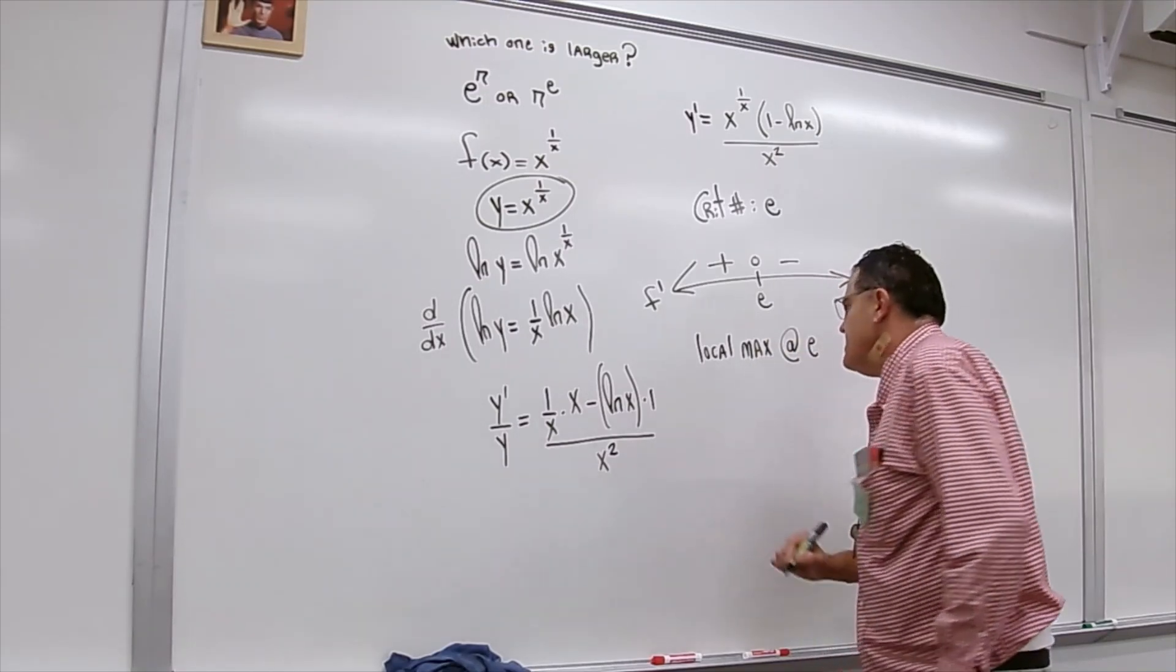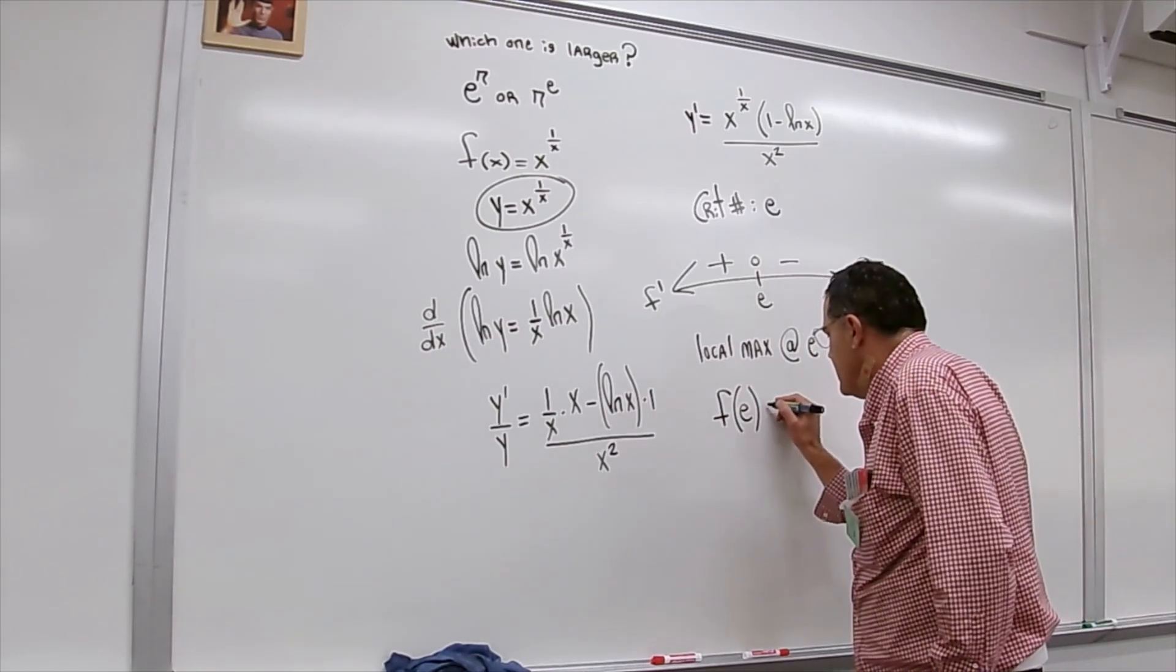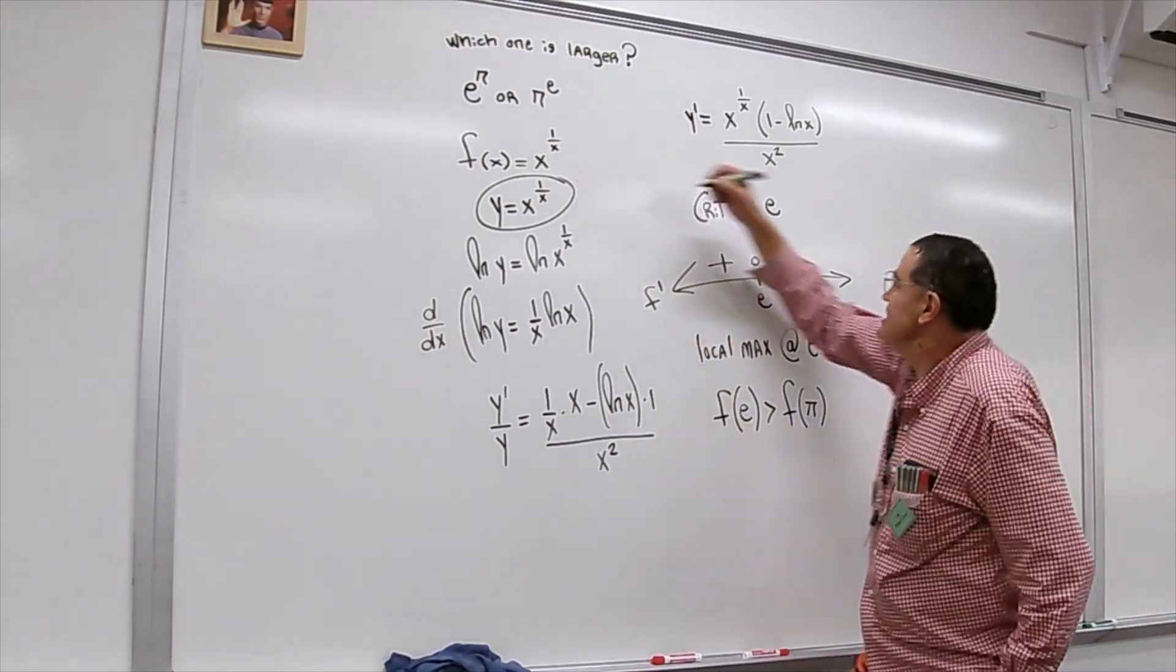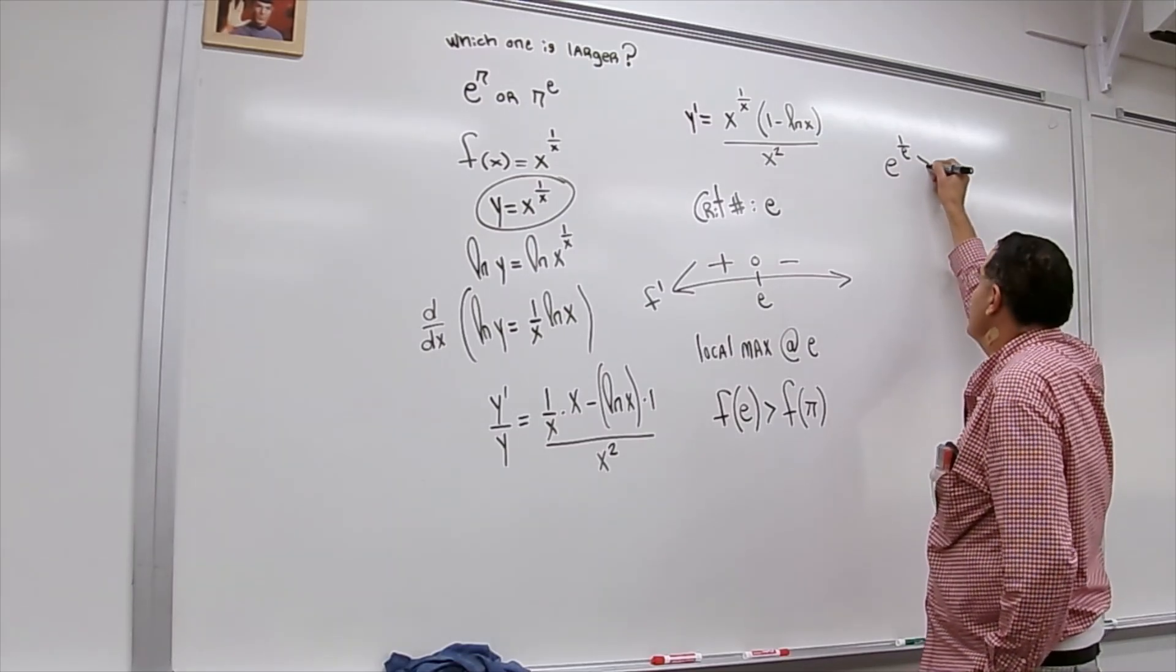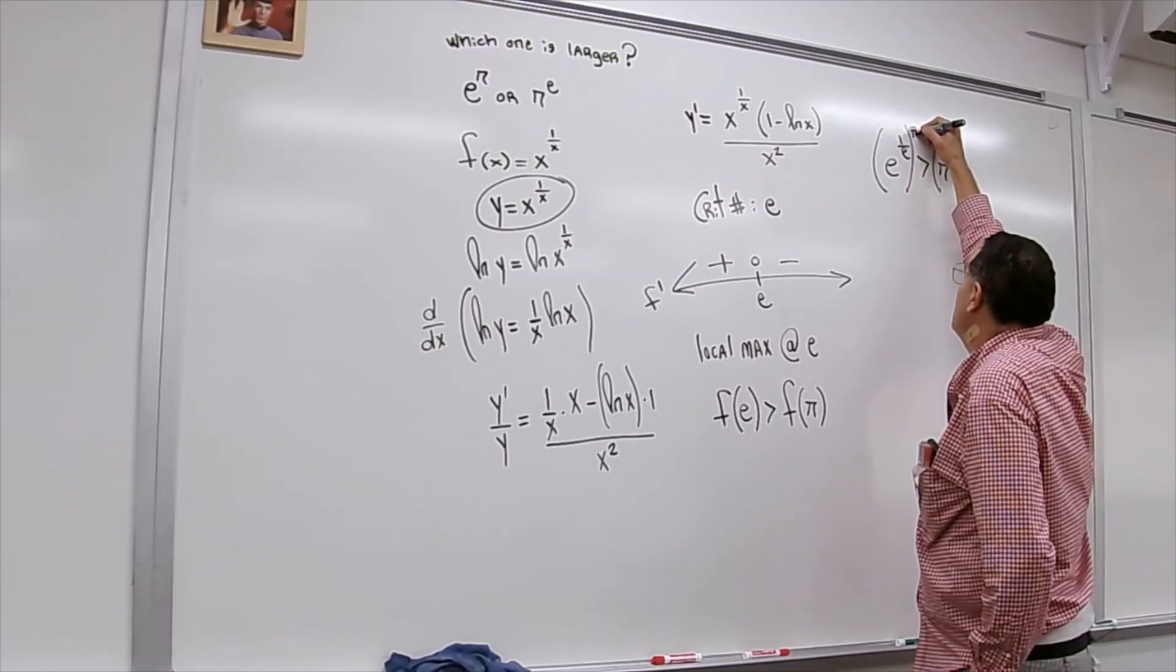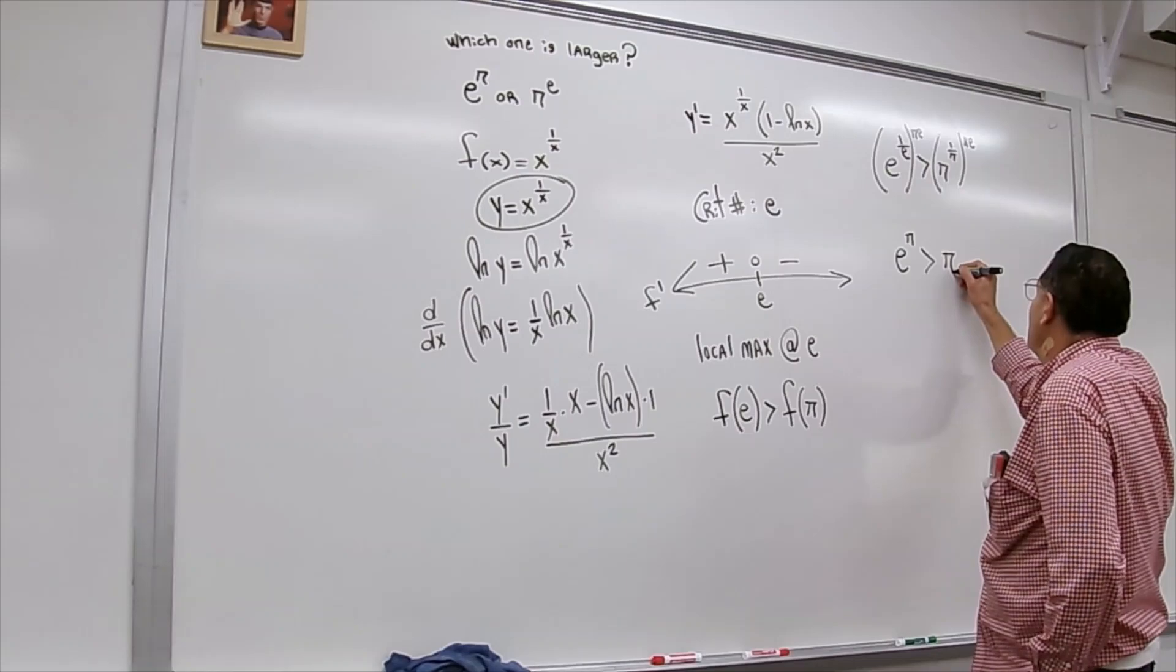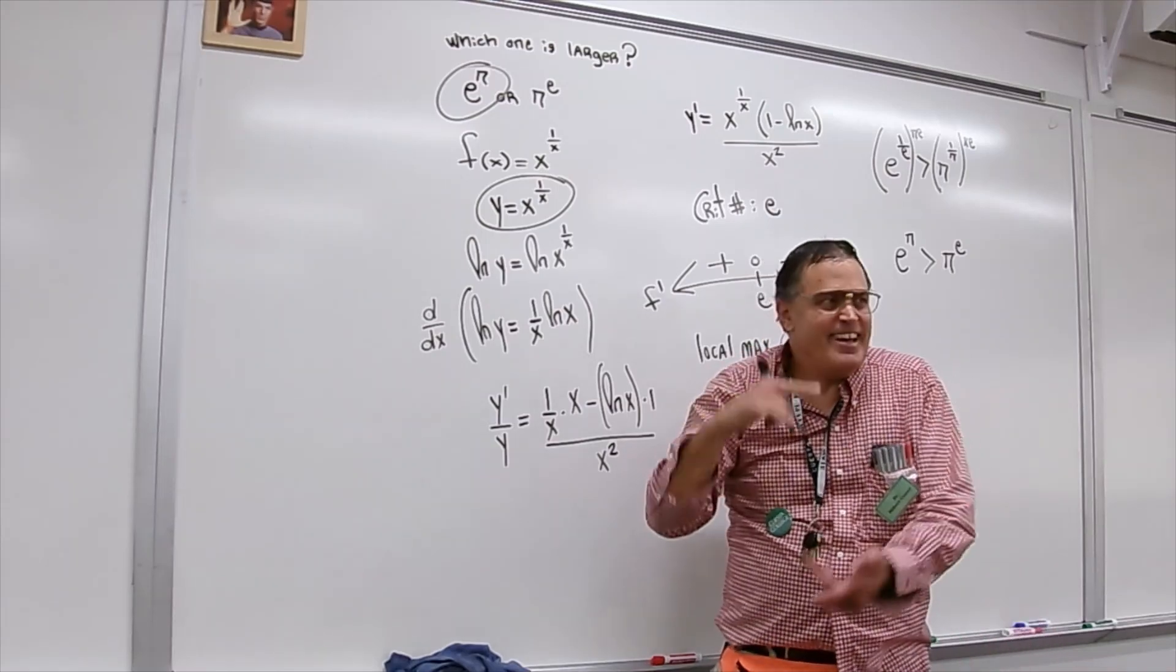Now that's a good thing to know because we can say our original function f of e is greater than f of something around it like f of 3 or f of pi well what is f of e f of e is e raised to the 1 over e power and f of pi is pi raised to the 1 over pi power I'm gonna go ahead and raise both sides to the pi e power and on the left you get e to the pi is greater than and on the right pi to the e so which one is larger e to the pi all done without a calculator.